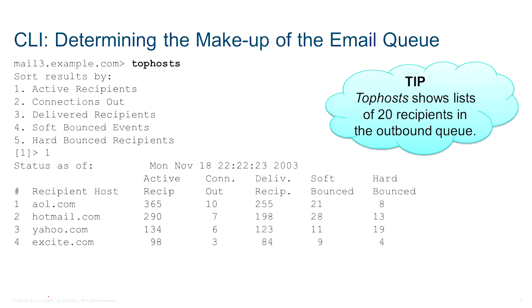Using the CLI, we can look at 'top host.' In a previous recording, I mentioned what happens when a destination host is not available. In a previous competitor's product, all email would just get into a single queue waiting to be sent. IronPort was the first to introduce the idea of having a separate queue for each destination domain. The 'top host' command lets you see all the top 20 hosts your ESA is communicating with to send outbound email.